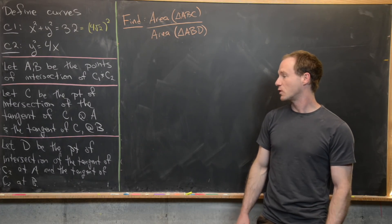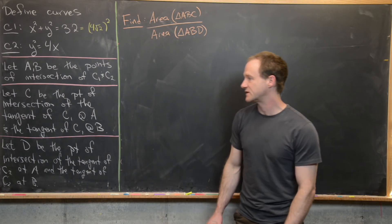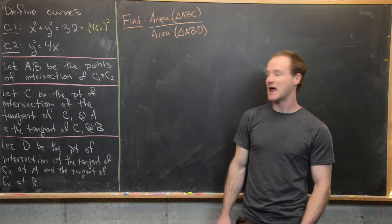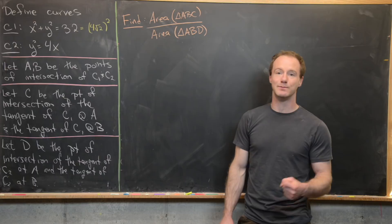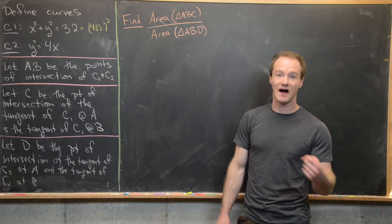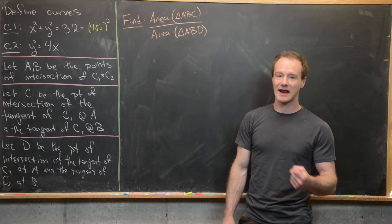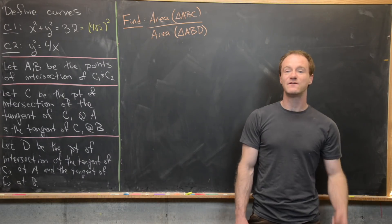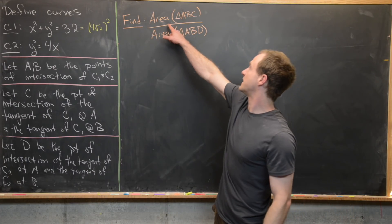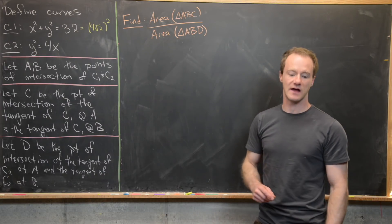We'll define two more points, C and D. C will be the point of intersection of the lines tangent to C1 at A and tangent to C1 at B. D will be the point of intersection of the lines tangent to C2 at A and B. Our goal is to find the ratio of the area of triangle ABC over the area of triangle ABD.